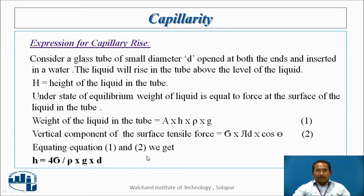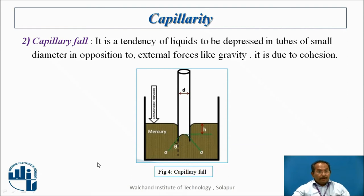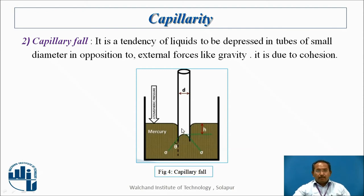Equating these two, we get H = 4σ / (ρ g d), where sigma is surface tension, rho is mass density, g is gravitational acceleration, and d is diameter. Similarly, we can find the expression for capillary fall. When the same tube is dipped in mercury, the liquid level falls — it does not rise — because mercury has a very high specific gravity of 13.6. Capillary fall is the tendency of a liquid to be depressed in tubes of small diameter, in opposition to external forces like gravity. It is due to cohesion.